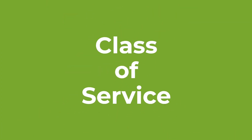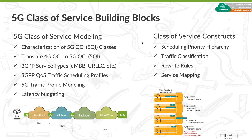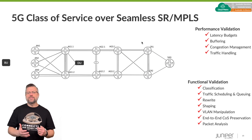We've executed multiple JVDs focusing on class of service — this is a big topic and very important to take up as a standalone JVD. Even though our reference architecture is 5G, the vast majority of this validation is relevant to any provider utilizing class of service. We include topics specific to mobile operators such as translation of 4G QCI to 5QI and characterization of those classes. We establish traffic classification based on 5G traffic patterns, and latency is a major topic, so we spend a lot of time validating whether our solution can fit within the given latency budget.